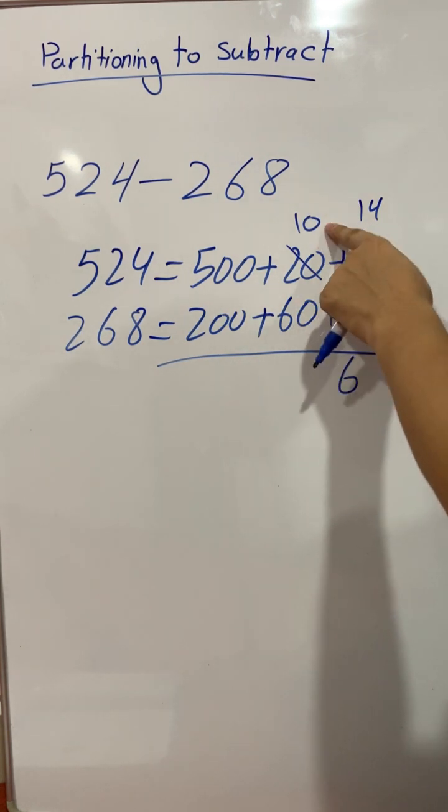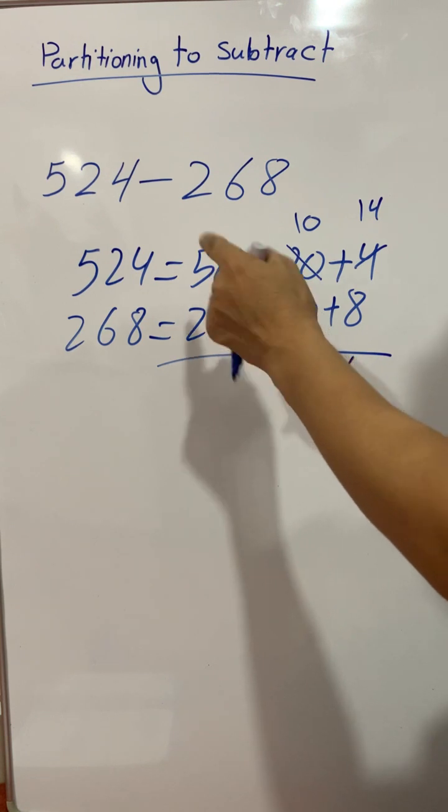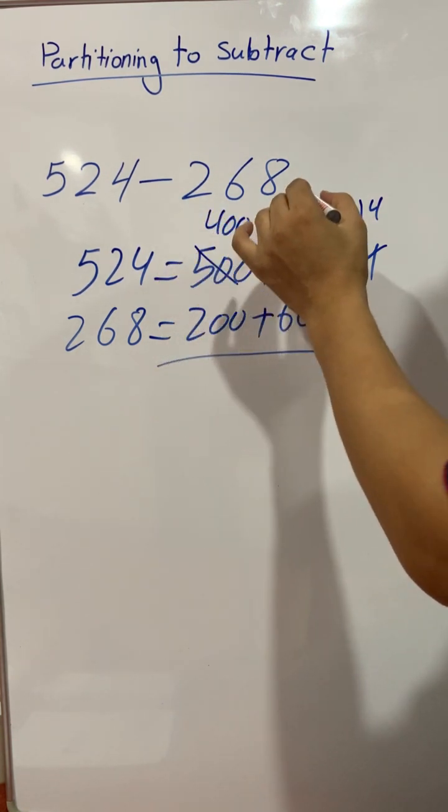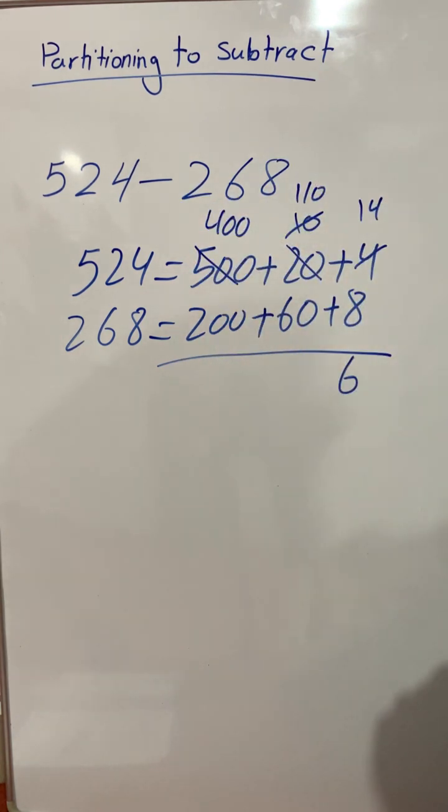Now we cannot subtract 60 from 10. When we take from the hundreds place, we take 100. So if we take 100, 400 will be left here and 110 we get here because 100 plus 10 is 110.